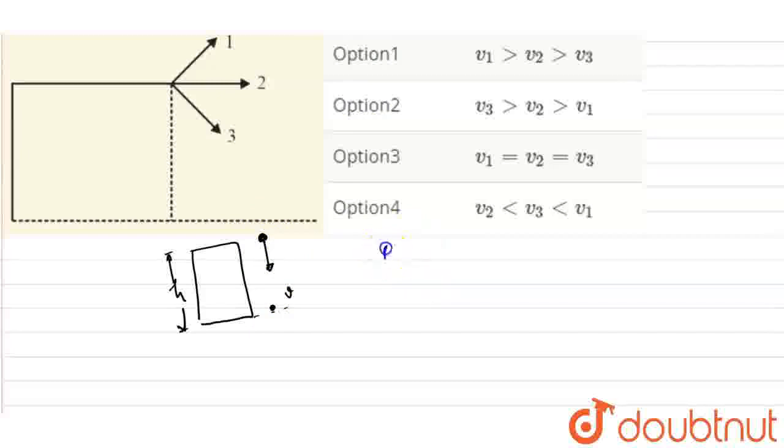So by energy conservation, the potential energy will equal kinetic energy. Since energy is conserved, potential energy at height h will be mgh equals kinetic energy, that is half mv squared. So the velocity comes from this: v equals square root of 2gh.